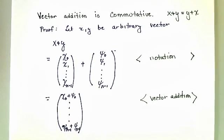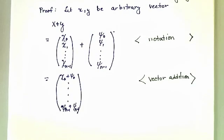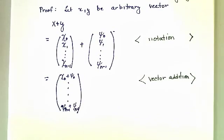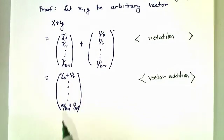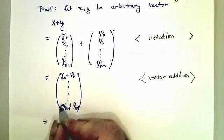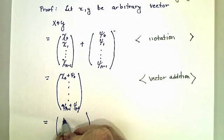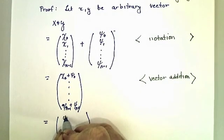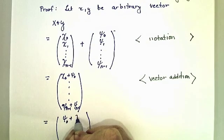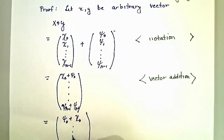Now, each one of these components, we will recall, are just real numbers. So, real numbers addition, we know is commutative, which means that this vector is equivalent to the vector of size n whose components are xi 0 plus chi 0 and so forth.